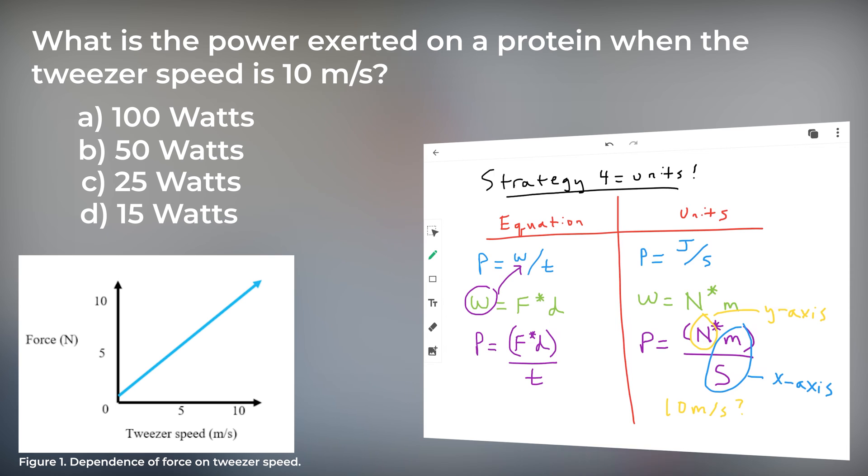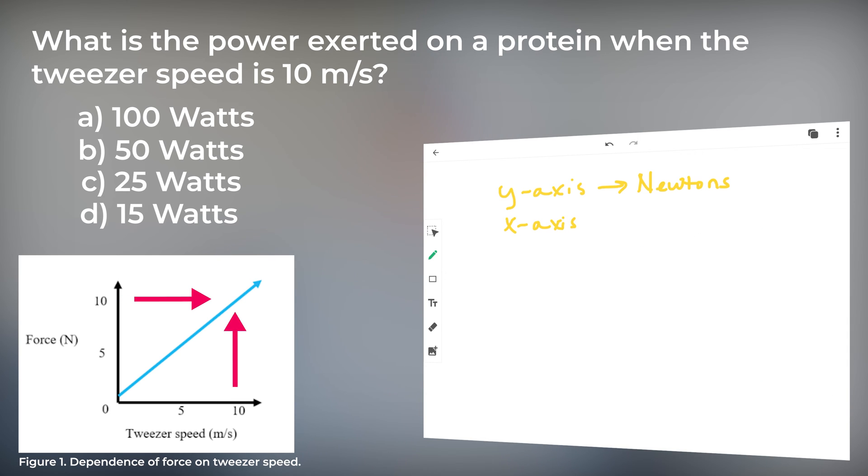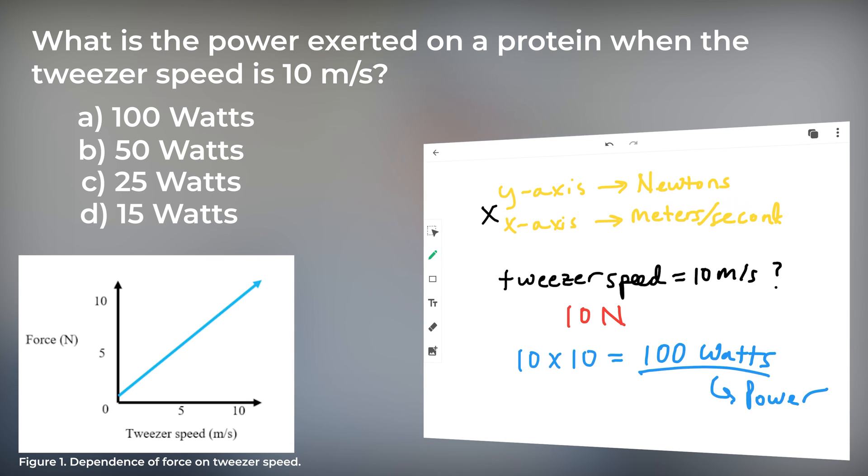So, all that is left to do is find where the tweezer speed is 10 meters per second, find that point on the line, and see what the corresponding value is for force. The value is 10 newtons, so we multiply 10 by 10 and get our answer, 100 watts. And remember, watt is a unit for power.